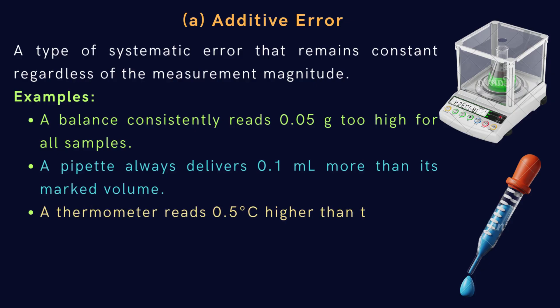A pipette always delivers 0.1 ml more than its marked volume. A thermometer reads 0.5 degrees Celsius higher than the actual temperature. A volumetric flask consistently overfills by 0.2 ml. These errors can be identified and corrected to improve measurement accuracy.